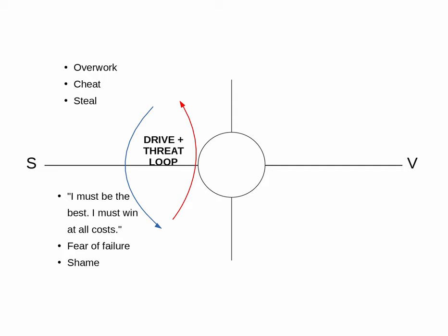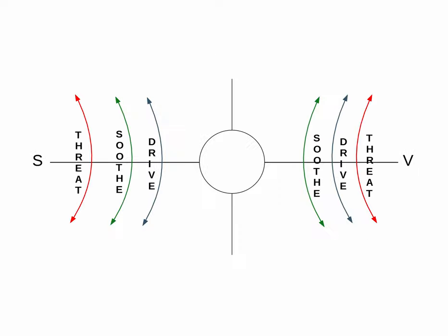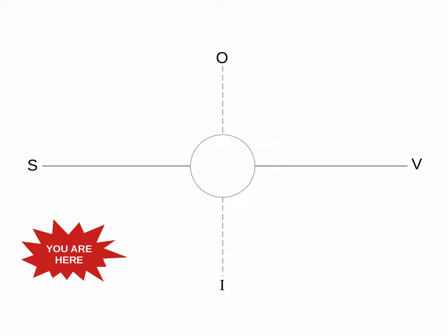To orient yourself on a matrix, ask these two questions: Where is my attention focused right now? Am I closer to the survival end of the spectrum or the vital end of the spectrum? From there, we can assess what kinds of emotion systems are at play. If my attention is focused on the inside in the form of rumination about a past painful event, and if I am feeling my survival instincts kicking in — fight, flight, freeze, etc. — that puts me in the bottom left quadrant of the matrix.